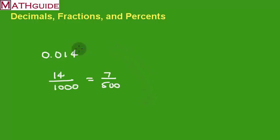So if I want to turn a fraction into a percent, you just move the decimal two places to the right. So this number would be one point four percent. Two places to the right, one point four percent. So all of these values say the same amount, 0.014, 1.4 percent, and seven five-hundredths.